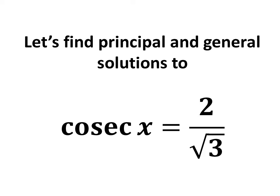In this video, we will learn to find the principal and general solutions to the equation cosecant of x equals 2 upon square root of 3.